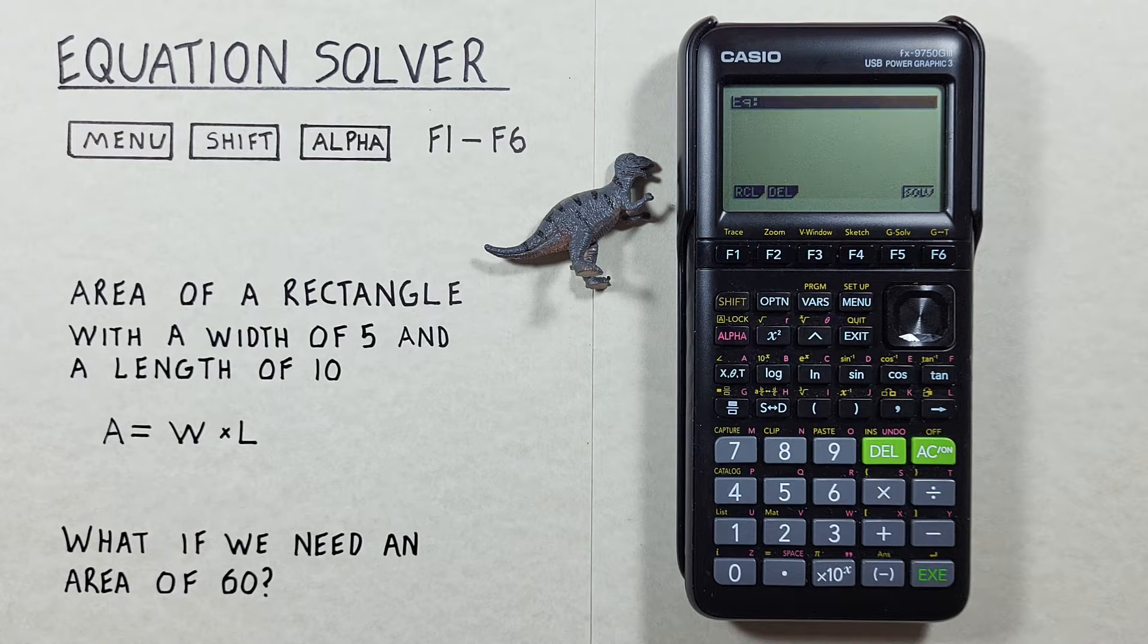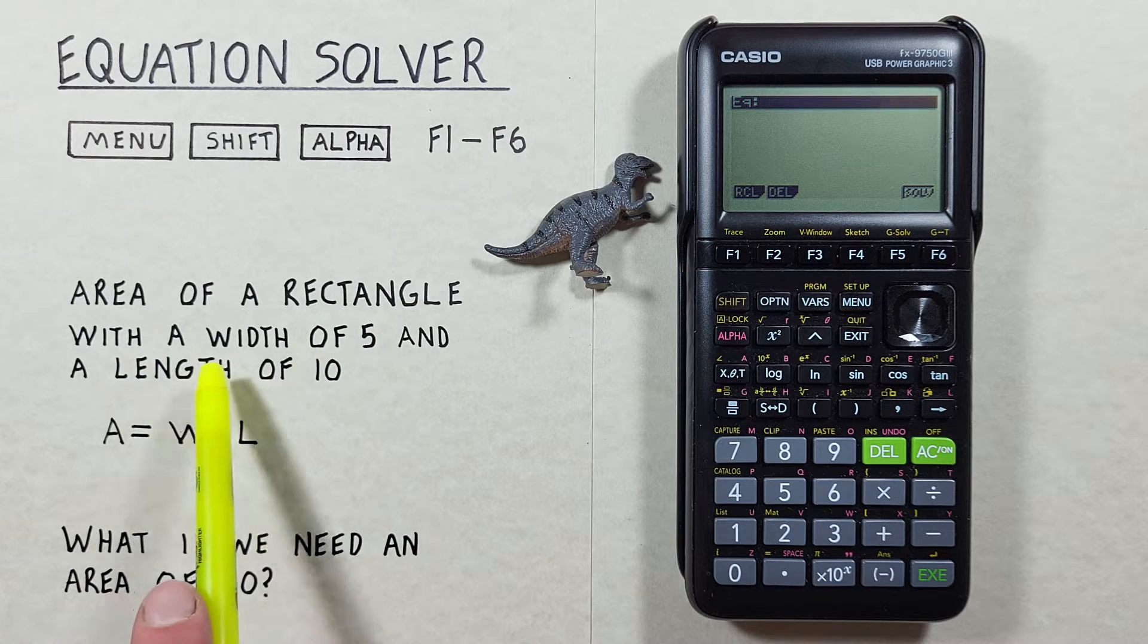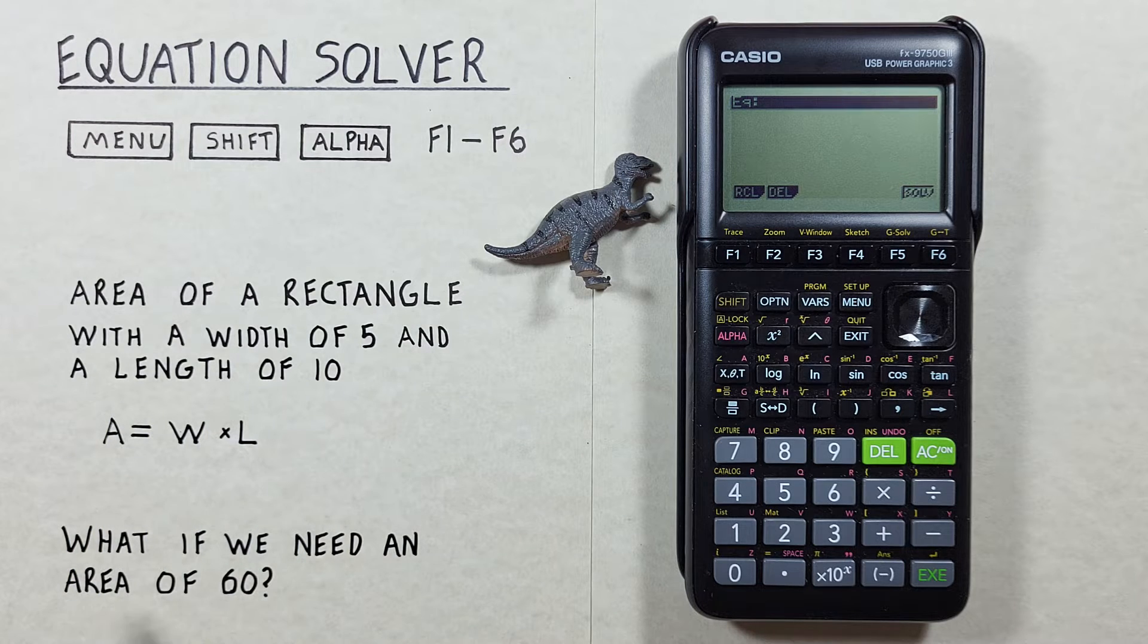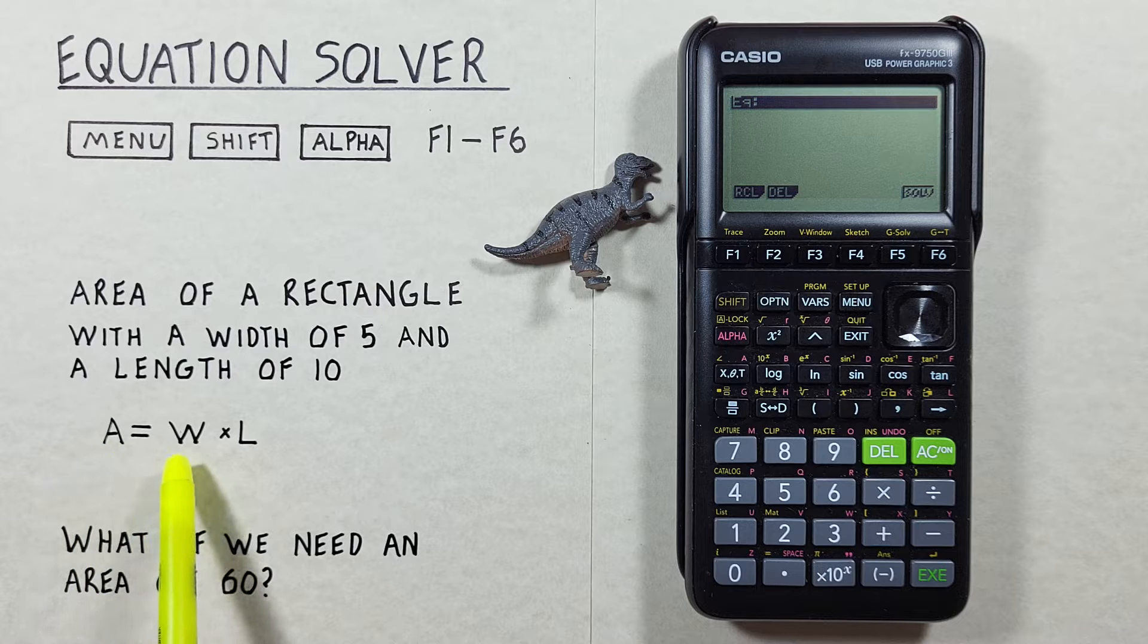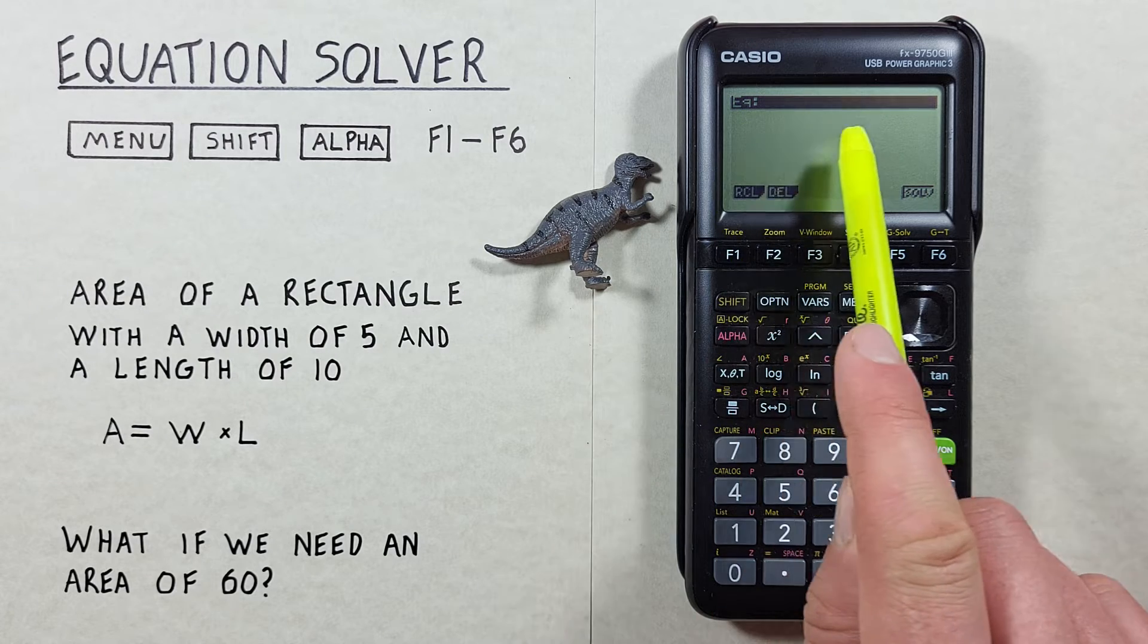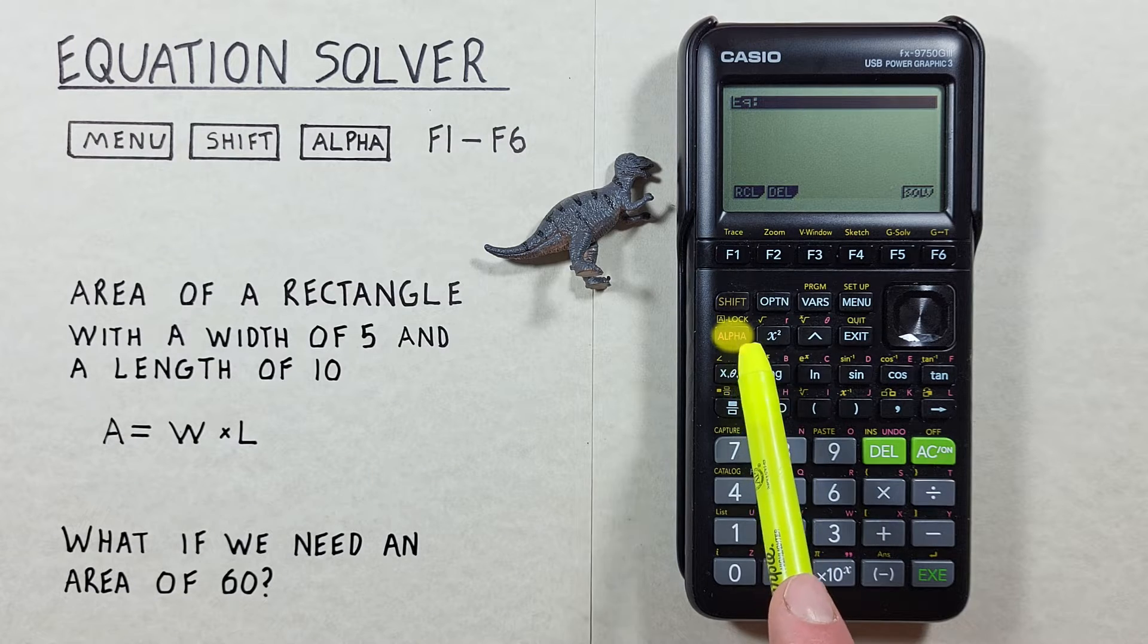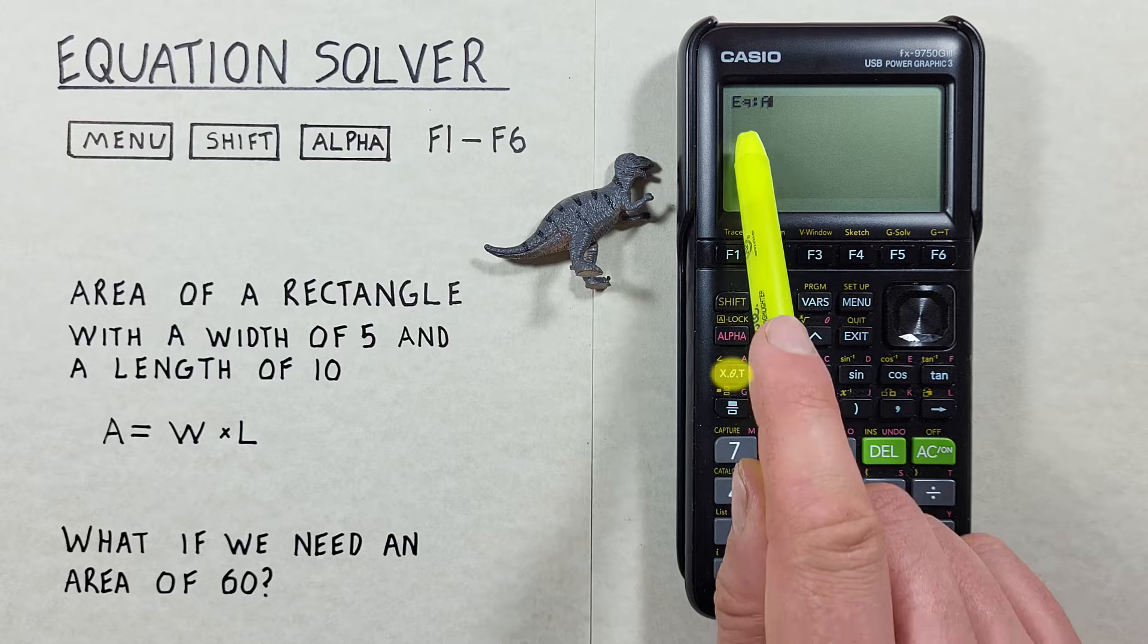We'll start with something simple. Let's say we wanted to solve for the area of a rectangle with a width of 5 and a length of 10. This is our equation here: A for area equals W times L or width times length. All we have to do is enter it here on the top of our screen. So we'll go alpha to start our alpha function A.